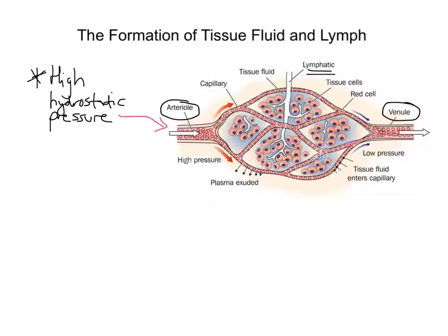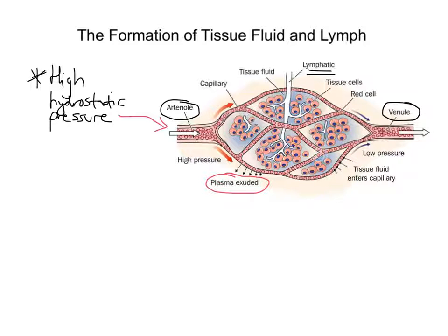This fluid contains plasma with dissolved nutrients and oxygen, but no cells or plasma proteins. It's this that's known as tissue fluid. Because of the high hydrostatic pressure, some fluid is pushed out through the permeable capillary wall. This fluid is simply plasma with some dissolved nutrients like oxygen in it, but cells aren't in there and plasma proteins aren't in there — because the plasma proteins are too large. And that ultimately is what tissue fluid is: plasma that's been exuded through the capillary walls.